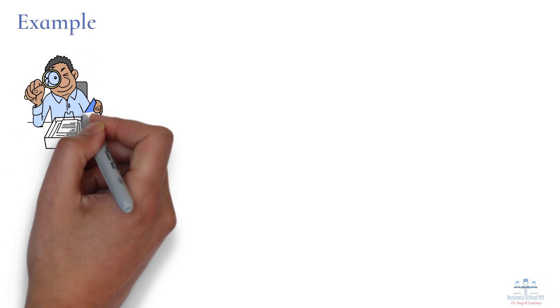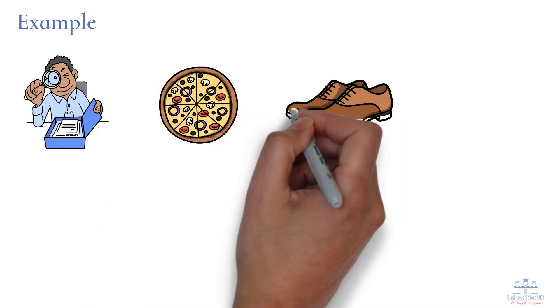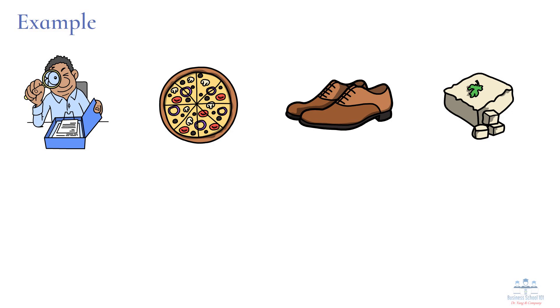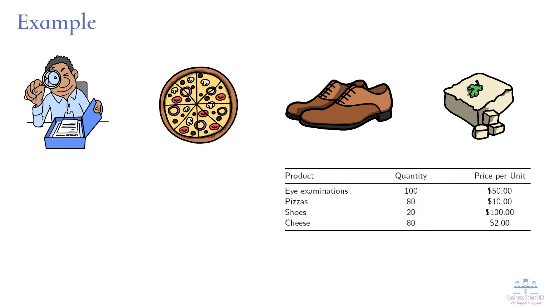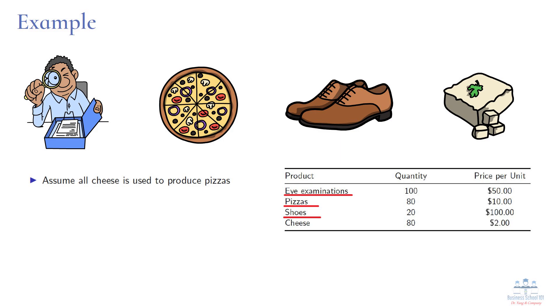Let's work with an example to make it concrete. Suppose a very simple economy produces only four goods and services: eye examinations, pizzas, shoes, and cheese. Assume that all the cheese in this economy is used in the production of pizzas. We'll use this information to calculate GDP — remember that GDP is the market value of all final goods and services. Therefore, we need to calculate the value of the final goods and services: eye examinations, pizzas, and shoes. Cheese would also be a final good if a consumer bought it to use in a meal, but here we assume restaurants buy all the cheese to use in making pizzas, so cheese is an intermediate good and its value is not included in GDP.